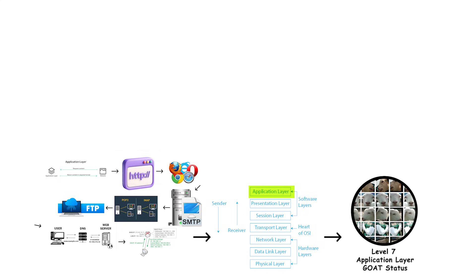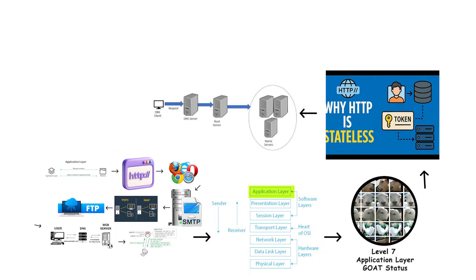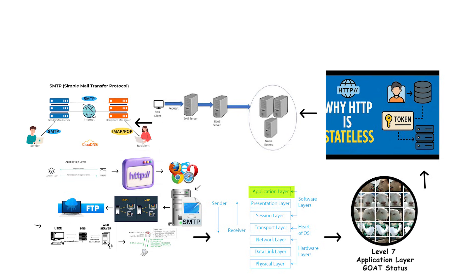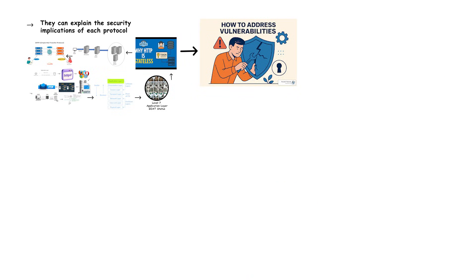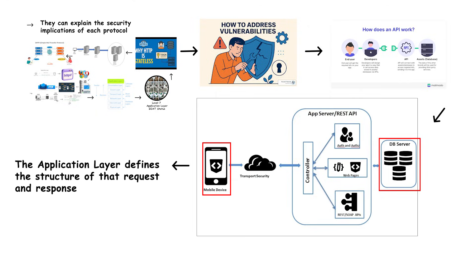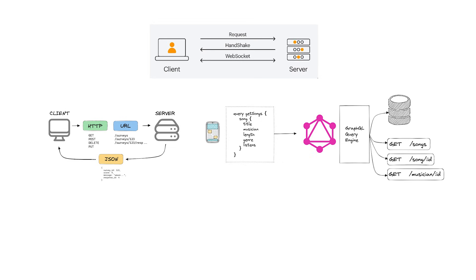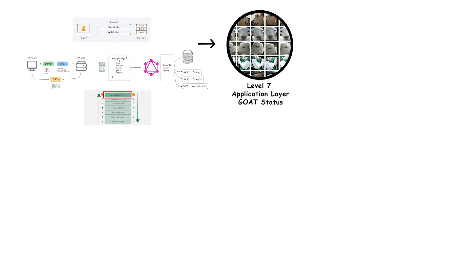Level 7 experts understand protocol design — why HTTP is stateless, why DNS uses both UDP and TCP depending on the situation, why email requires multiple protocols working together. They can explain the security implications of each protocol and how modern versions have evolved to address vulnerabilities. They understand APIs and how applications interface with the network: REST APIs, GraphQL, WebSockets — all operating at Layer 7. Level 7 people can design these systems from scratch.